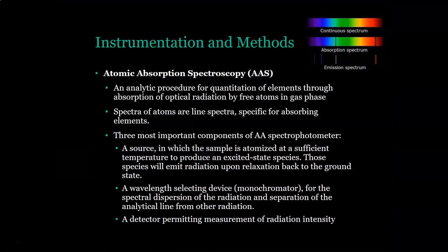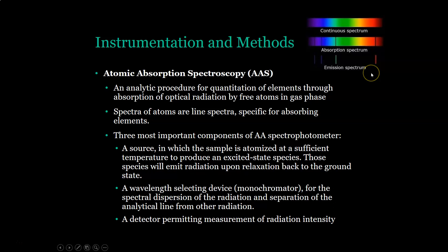A closely related technique is atomic absorption spectroscopy. Instead of emission, we look at absorption. With an emission spectrum you see what is being emitted; with absorption, you look at the wavelength being absorbed within a continuous spectrum. AAS is an analytic procedure for the quantitation of elements through the absorption of optical radiation by free atoms in the gas phase. The spectra of atoms are line spectra, specific to the absorbing elements — just as with emission, each element will have its own unique pattern.